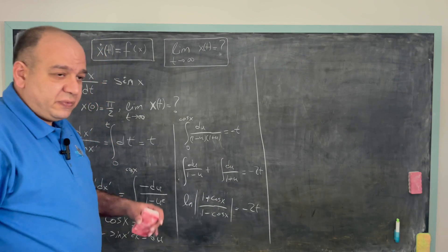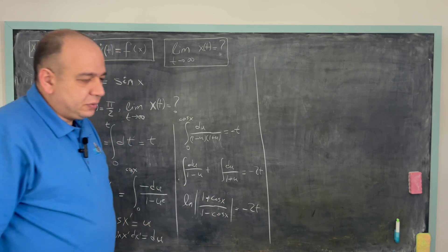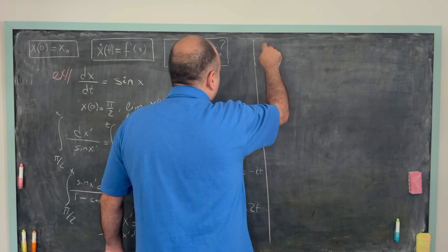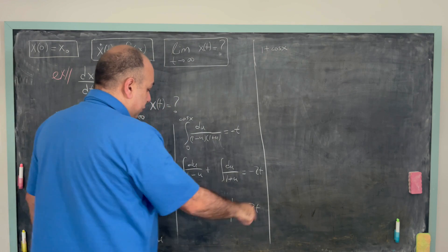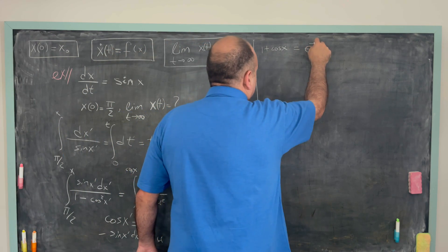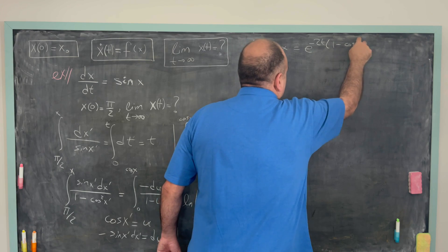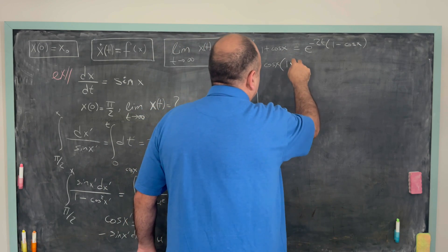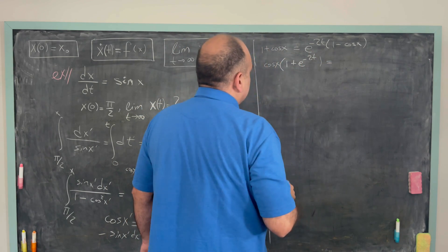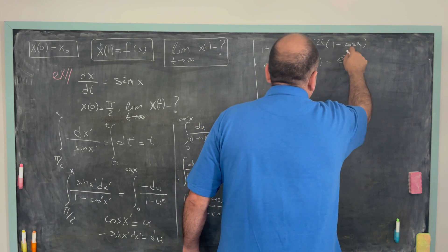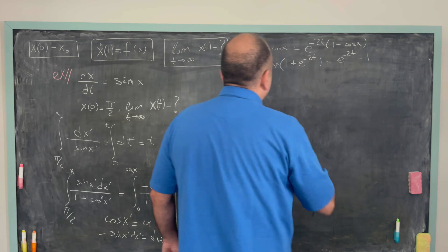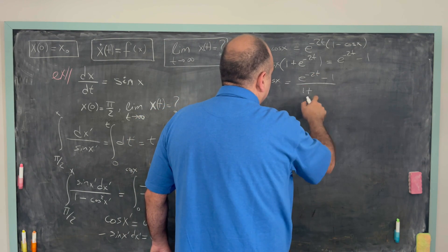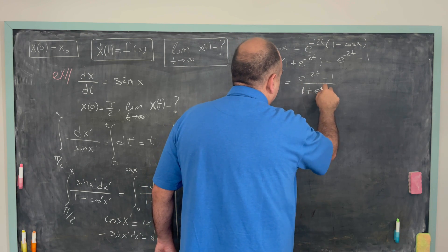Since cos x is between -1 and 1, we remove the absolute values. Exponentiating: 1 + cos x = e^{-2t}(1 - cos x). Collecting cos x on one side gives cos x = (e^{-2t} - 1)/(1 + e^{-2t}).